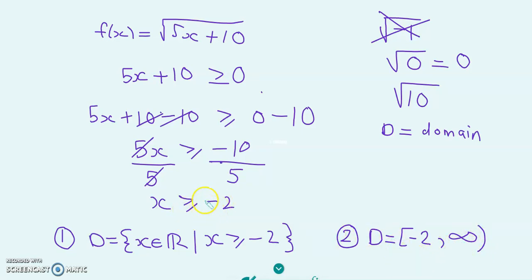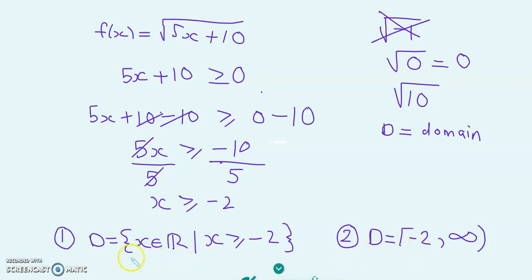The lowest value that x can be is minus 2, and we include minus 2 because of the equal sign, so we put a square bracket. There's no maximum value of x, so we put infinity with an open bracket. So the domain in interval notation is [-2, ∞). You can write the domain using set notation or interval notation — either way is fine.